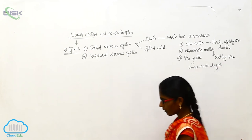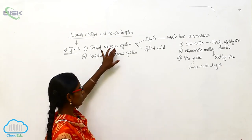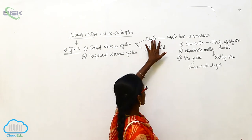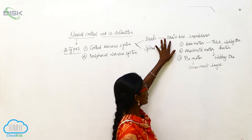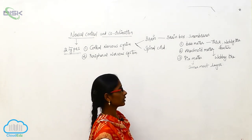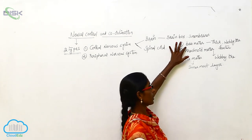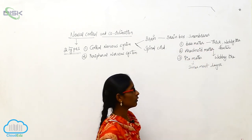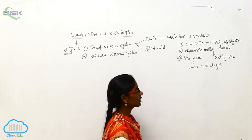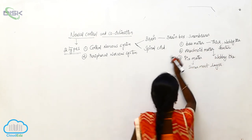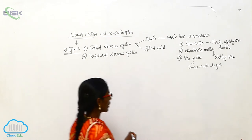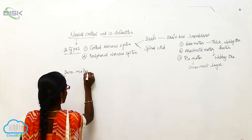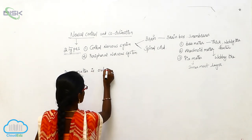The Central Nervous System consists of two parts: Brain and Spinal Cord. The Brain is present in the Brain Box and has three membranes — Dura Mater, Arachnoid Mater, and Pia Mater. Dura Mater is a thick, webby-like structure and is the outermost layer.